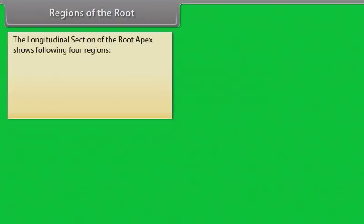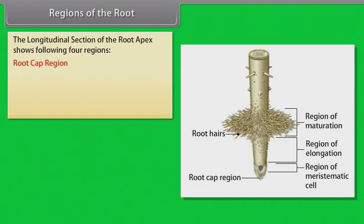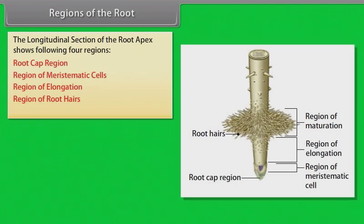The longitudinal section of the root apex shows the following regions: root cap region, region of meristematic cells, region of elongation, region of root hairs, and region of maturation.